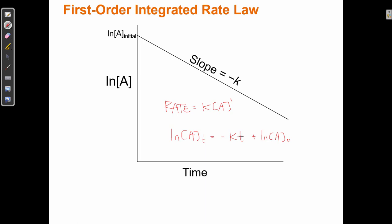If I know how much time has passed, how much A I started with, and what the rate constant is, then I know how much A I have left. That's what an integrated rate law allows me to do.